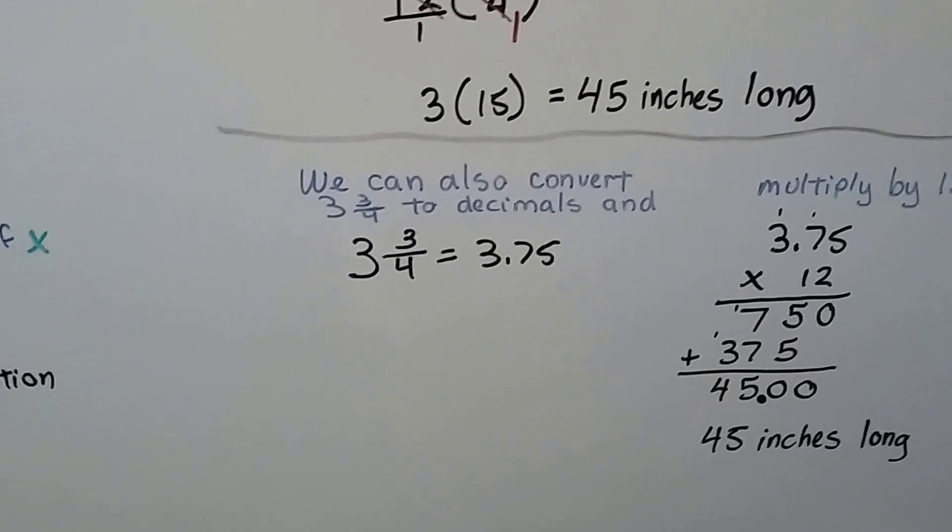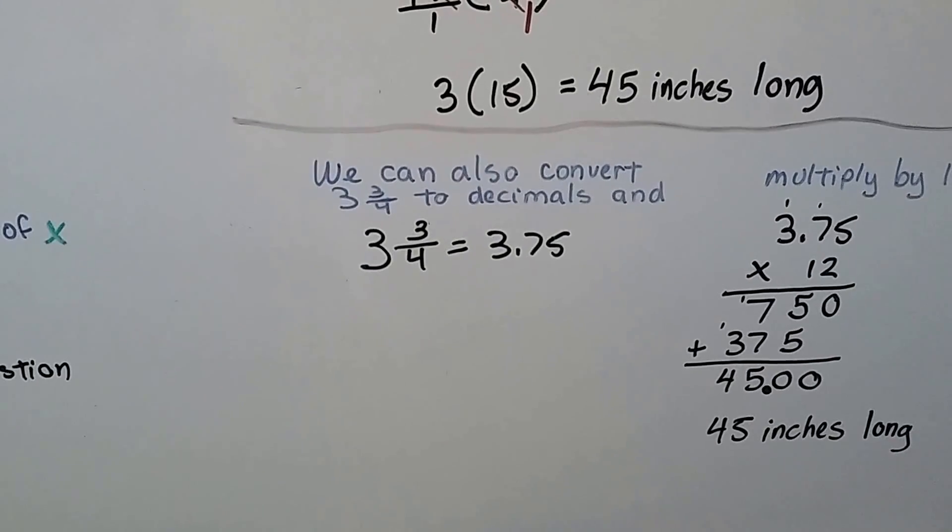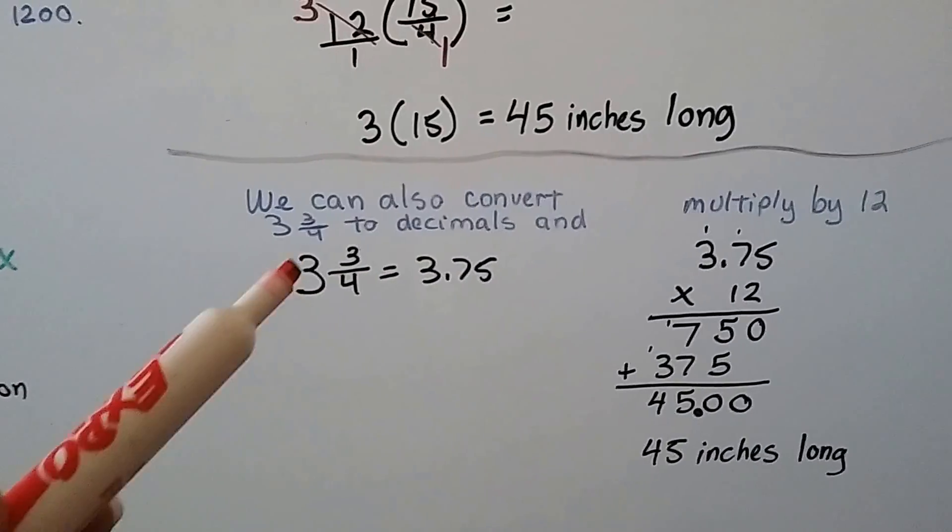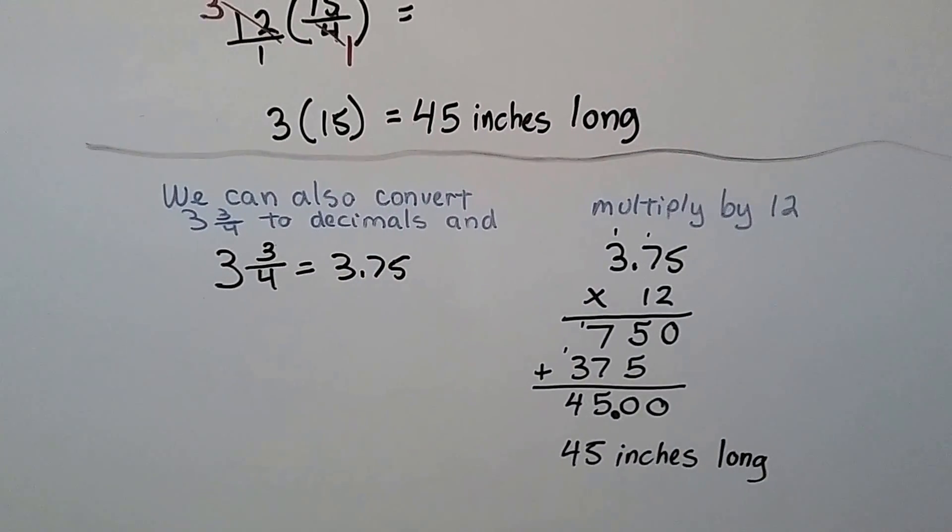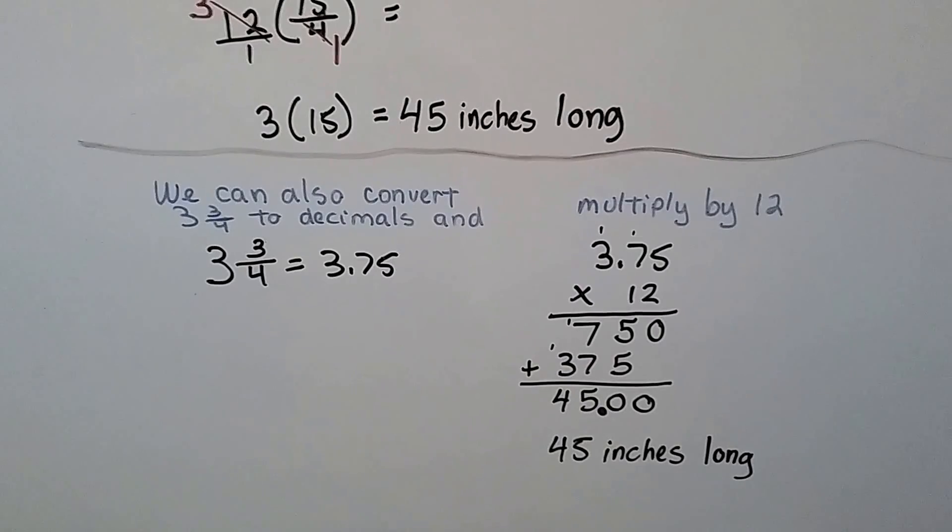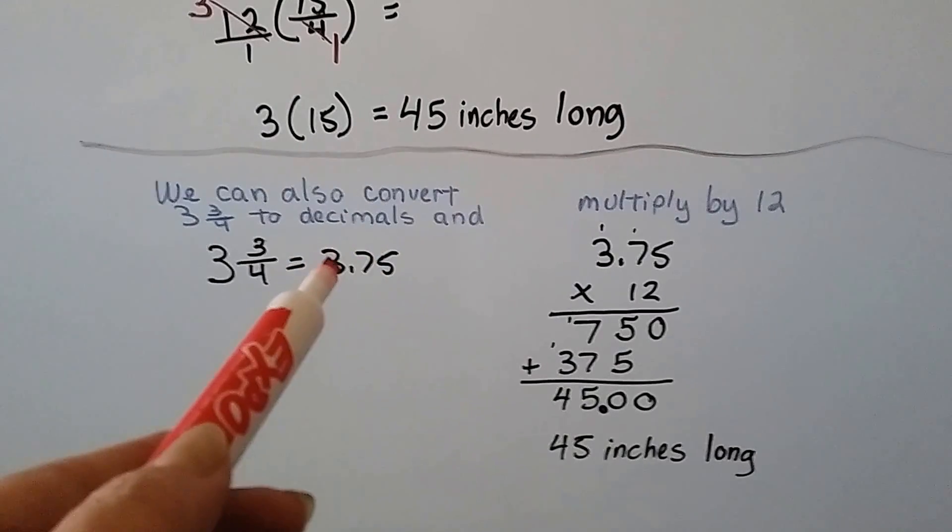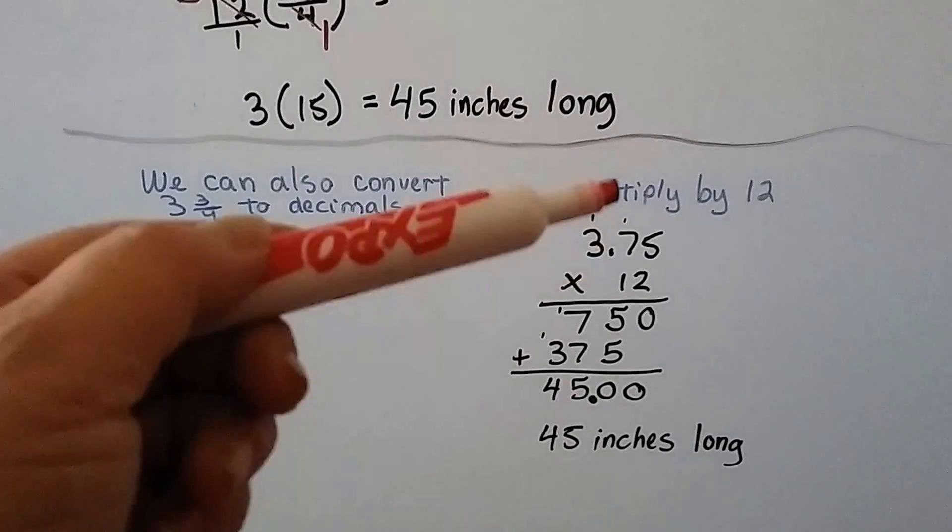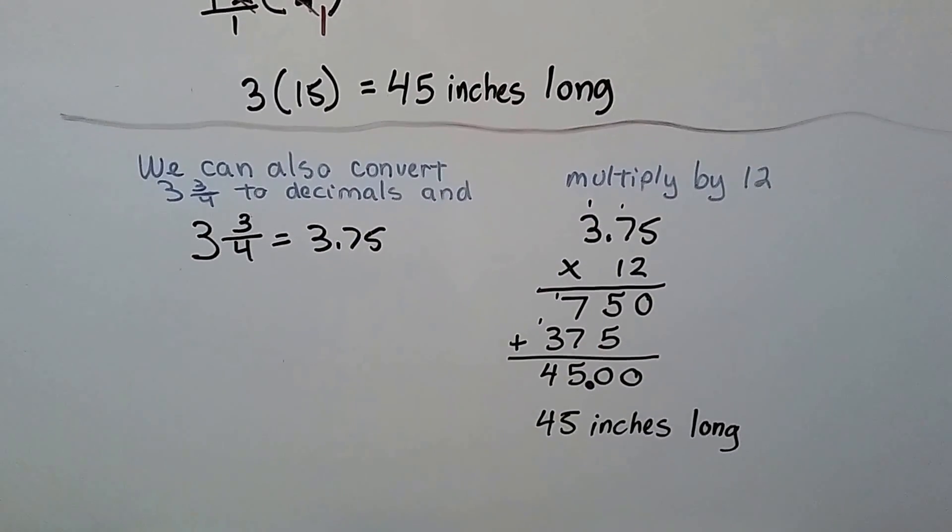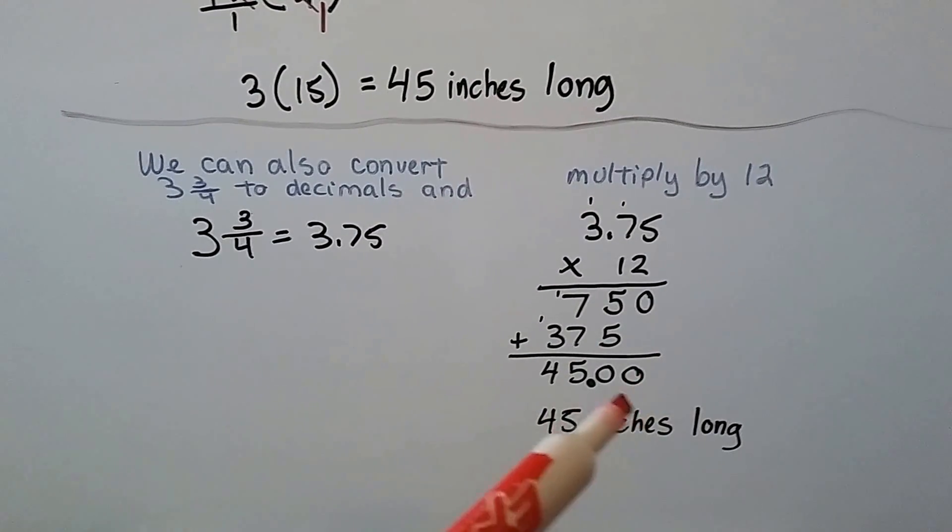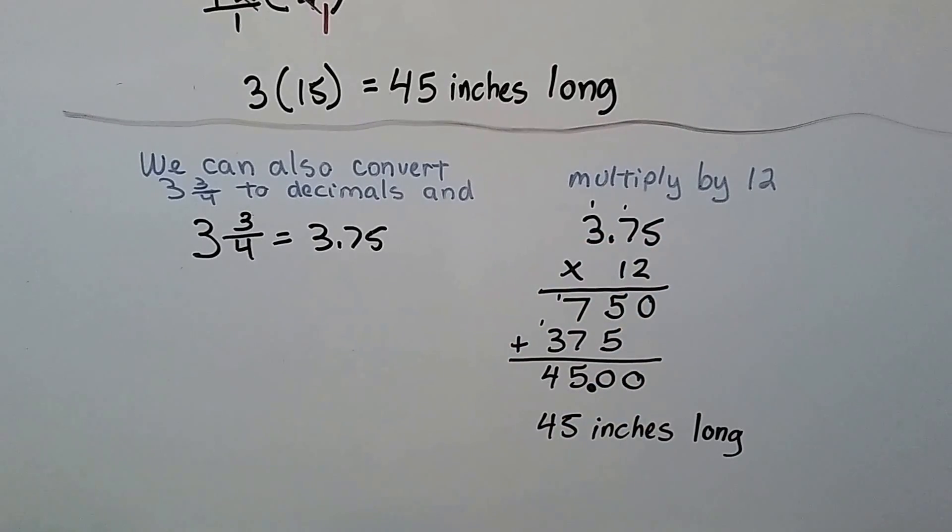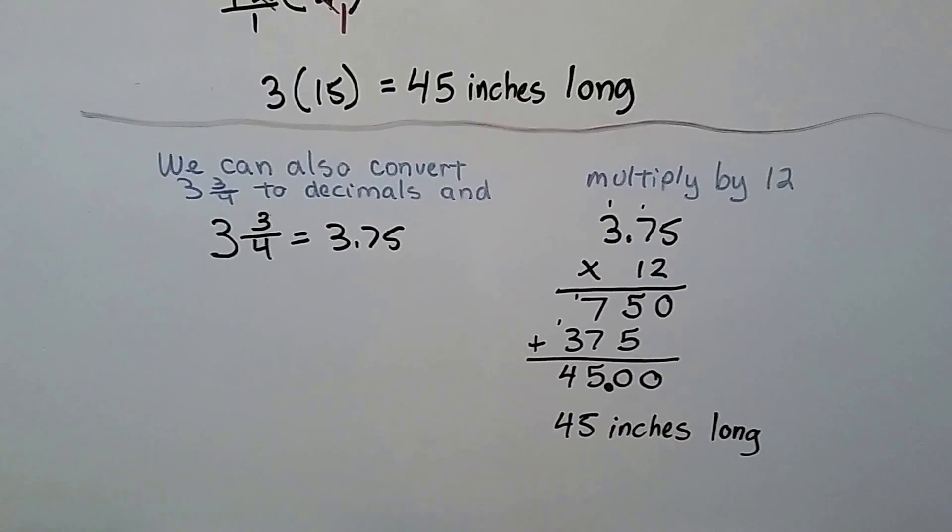Now we can also convert that 3 and 3 fourths to decimals. 3 and 3 fourths is 3.75. Then we can multiply that by the 12 inches that is in each foot. And if we multiply this by the 12, that will tell us the inches. We just do our two-digit multiplication and get 45. And we move that decimal point over two spaces because there's two spaces, two hops over in the equation. We get 45 inches long.